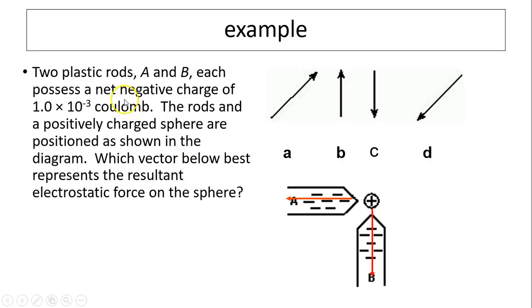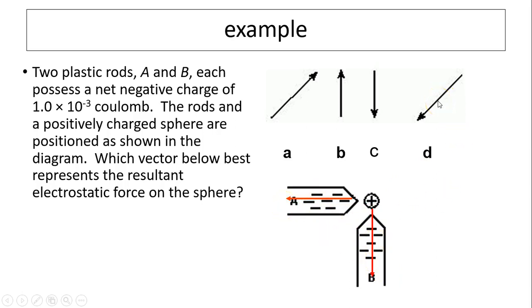Another example. Two plastic rods A and B each have a negative charge. The rods and a positive charged sphere are positioned as shown. Here is the positive charged sphere. Which vector represents the resultant force on this sphere? One force will be going down, one force will be going to the left. The resultant of these two forces will produce the resultant as D.